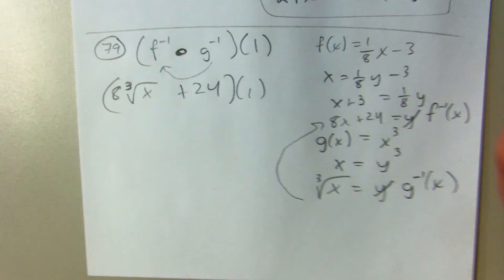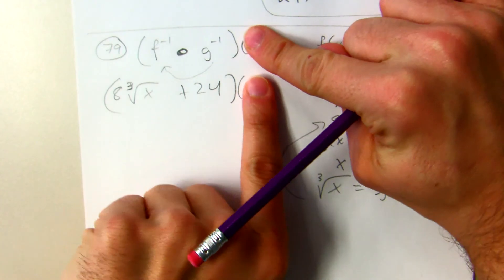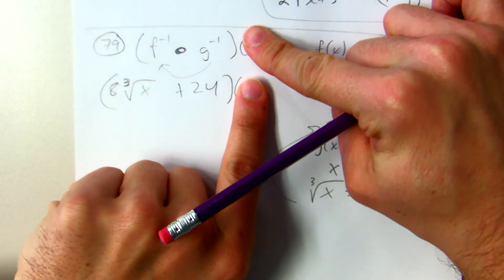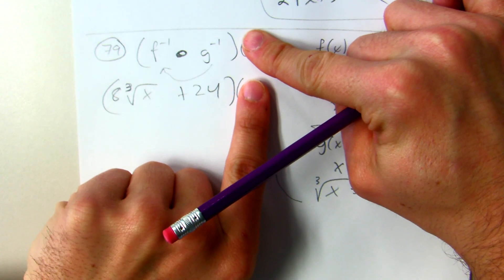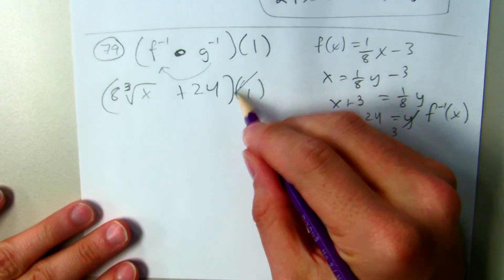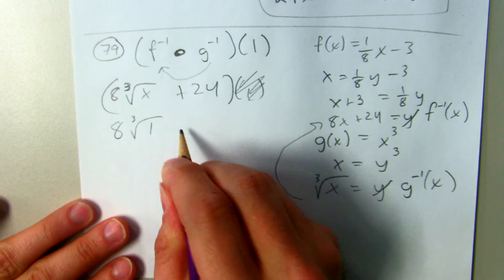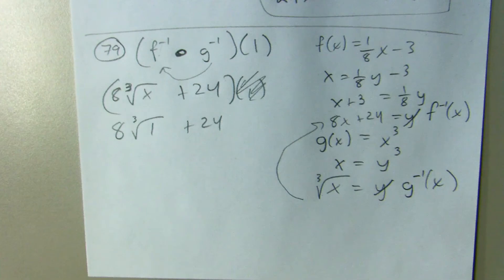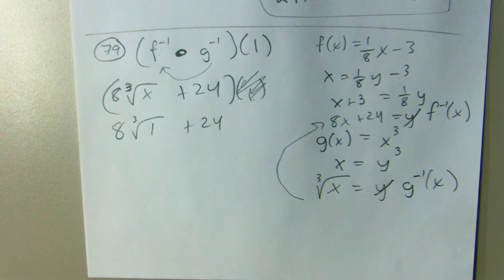Now if you didn't have anything out here, if you didn't have this 1 here, that would imply they want you to keep your answer in terms of X and you'd be done. Since they put a 1 here, that means they actually want you to plug 1 in for X.